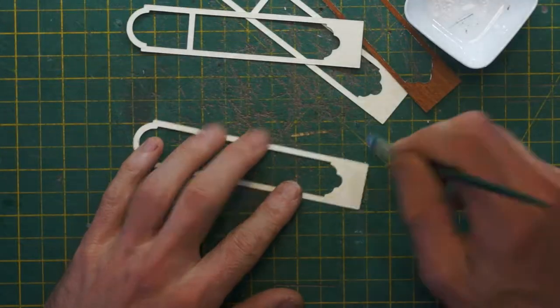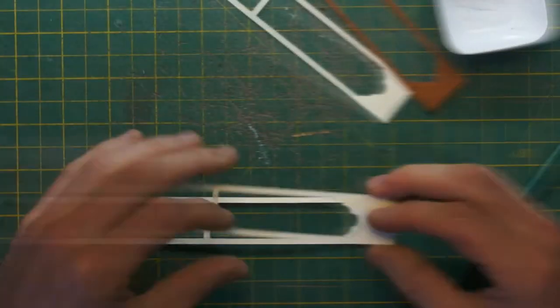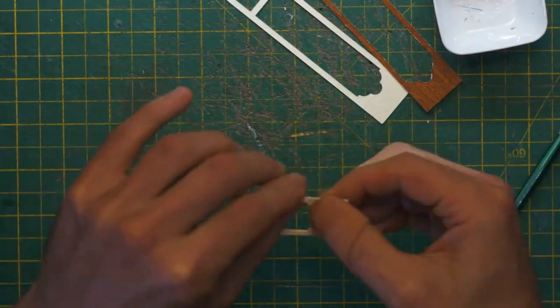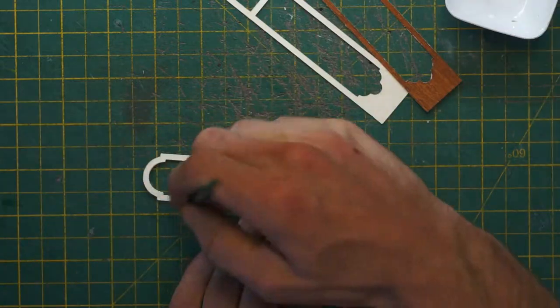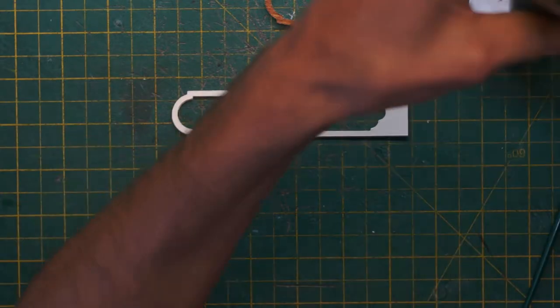While that's drying we'll move on to the front door which has a few layers to stick together. It's got a very thin edge so I'm being very careful with the glue. And very careful to make sure it all lines up.